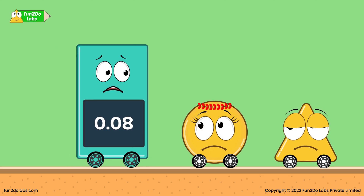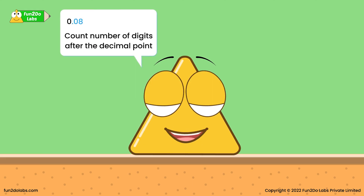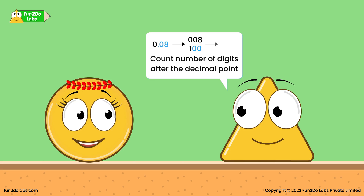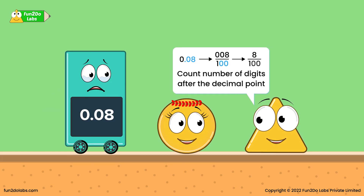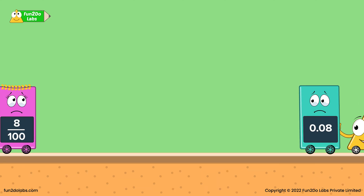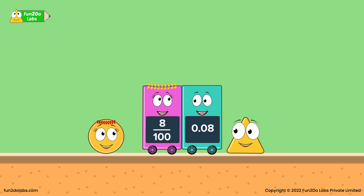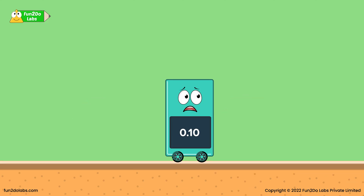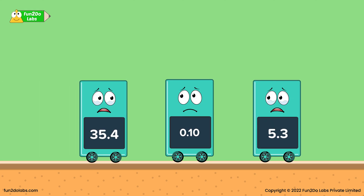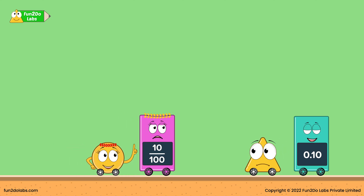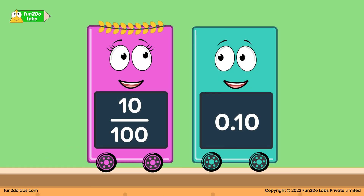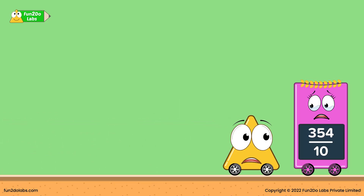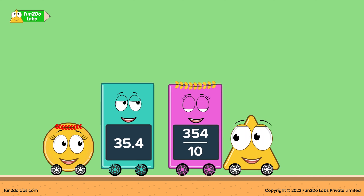0.08 has two digits after the decimal point. That means the denominator will have two zeros. So 100 is the denominator and 8 is the numerator. The fraction is 8 by 100. Look there — she must be searching for you. 0.08 is elated; he finally found his sister. This continues and the kids need to find fraction sisters of 0.10, 5.3, and 35.4. 0.10 and 10 by 100 are the siblings. 5.3 and 53 by 10 are the siblings. And finally, 35.4 and 354 by 10 are the siblings.